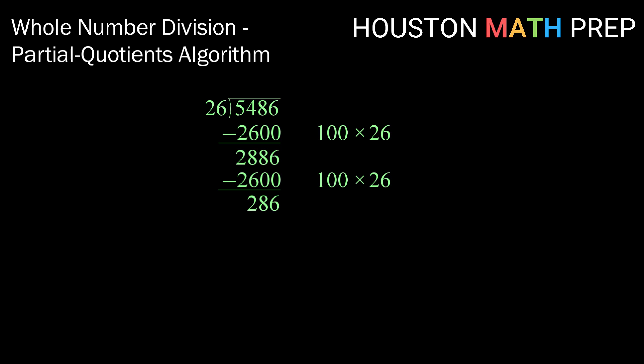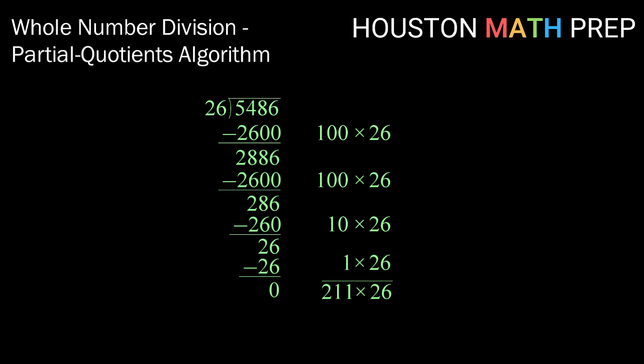Now that we've performed that subtraction we have 286. Now we can no longer subtract a multiple of 100 times 26. So we'll move down a power of 10 and subtract 10 times 26. That leaves us with a result of 26, which is of course 1 times 26. 26 minus 26 leaves us with 0. Now we know we're finished. So what we're going to do here is add up how many multiples of 26 we subtracted. 100 plus 100 plus 10 plus 1 is 211. So our answer to our division problem is 211.